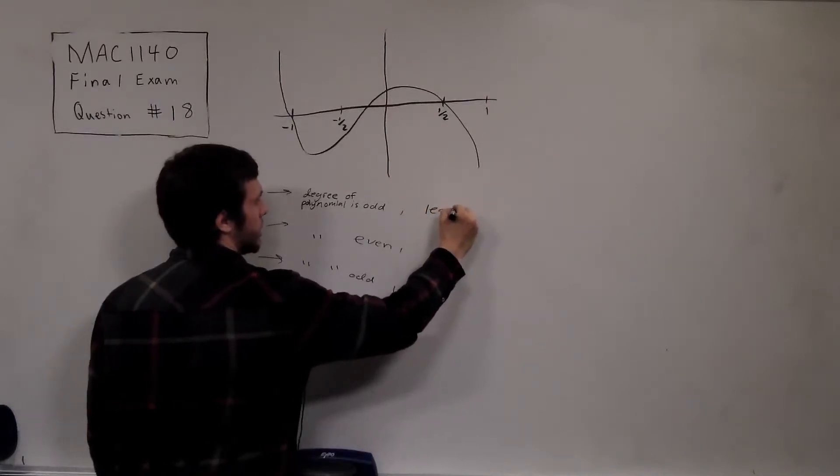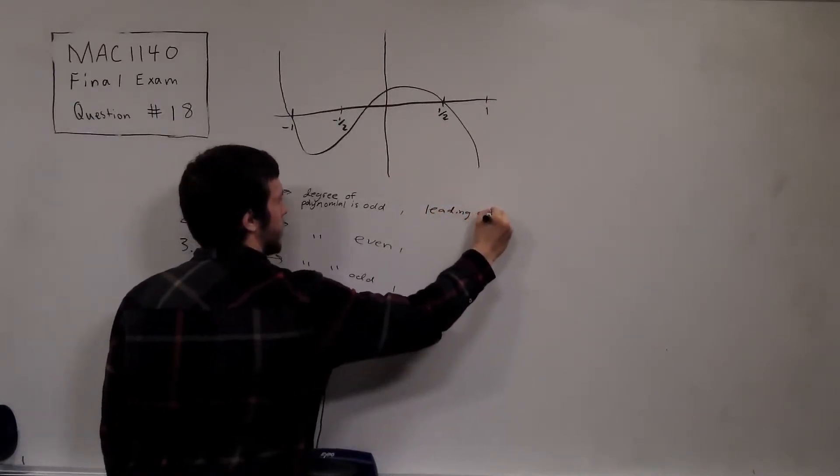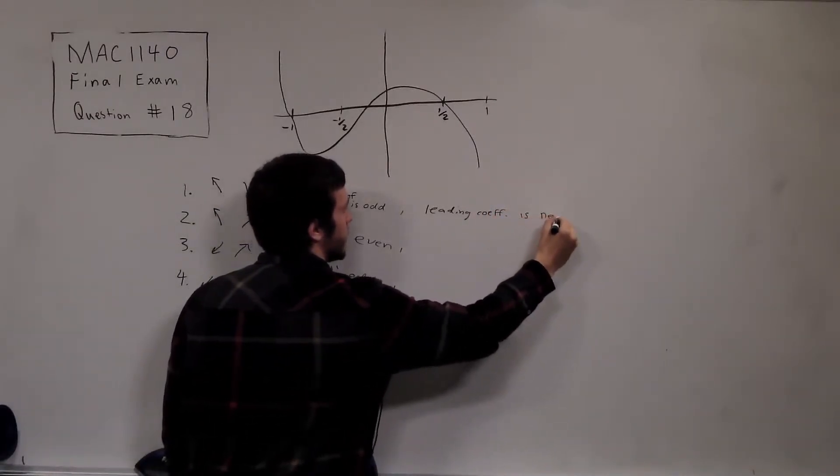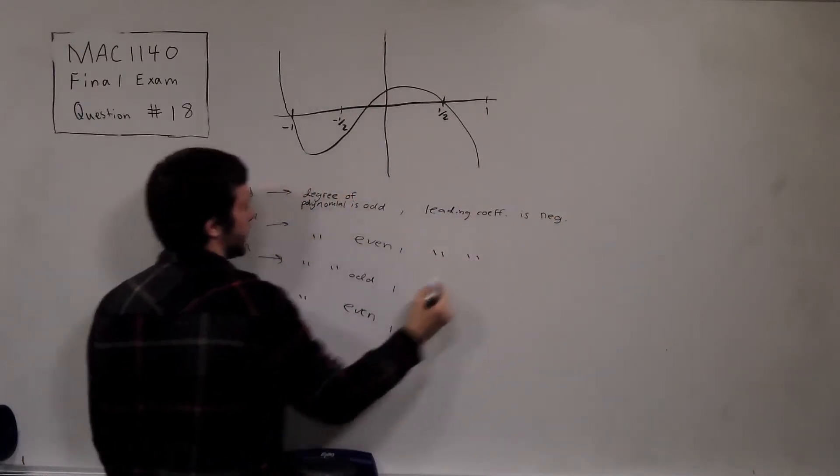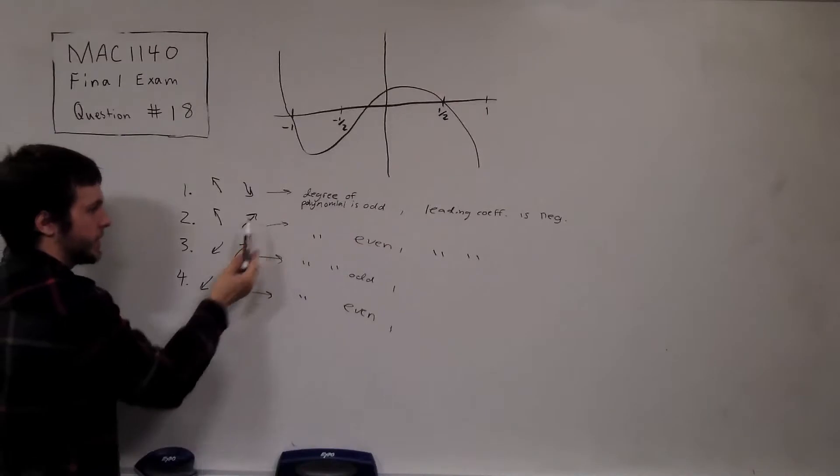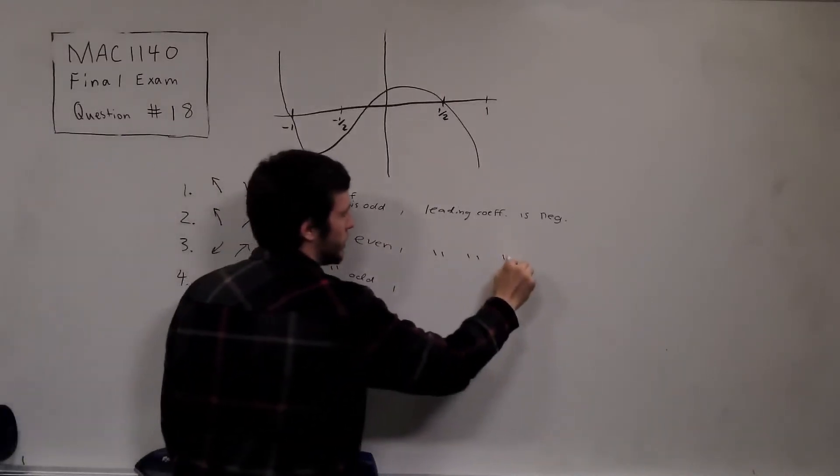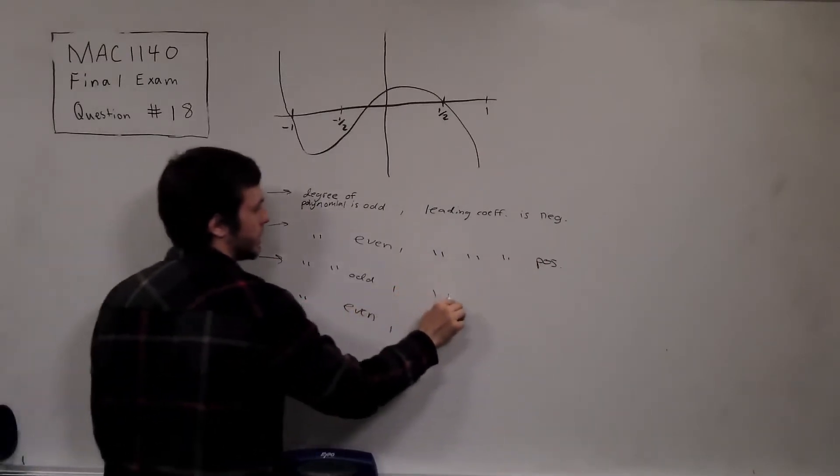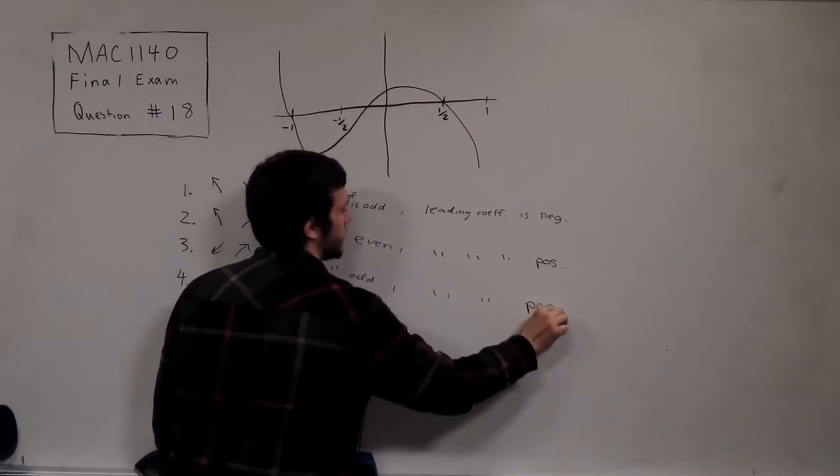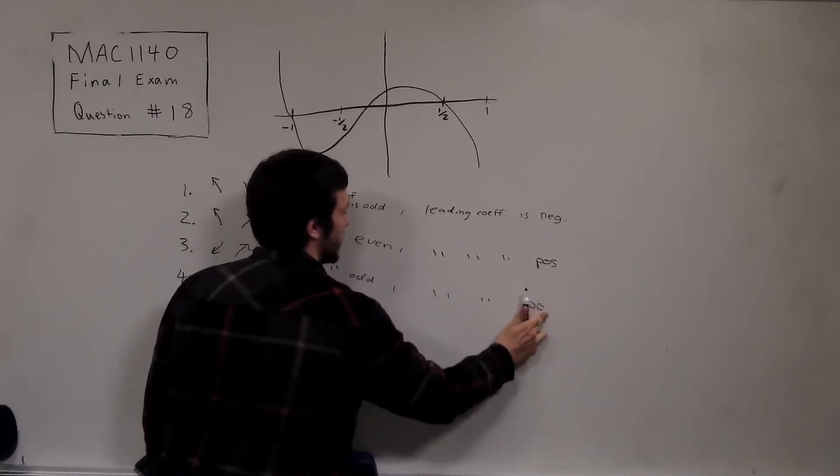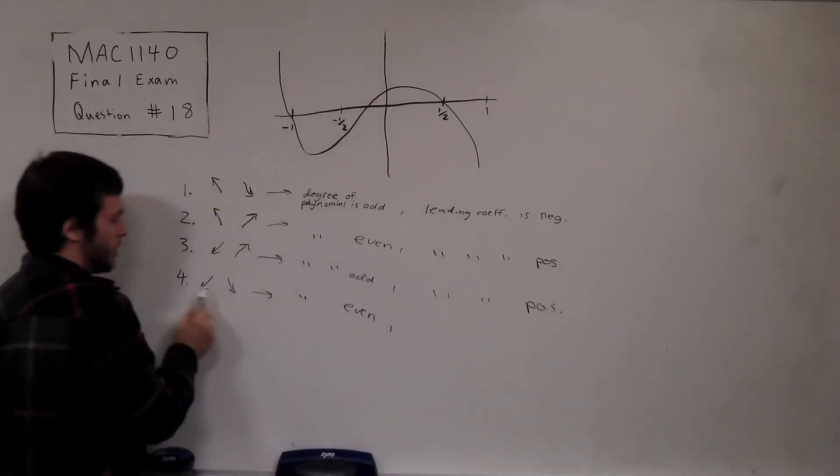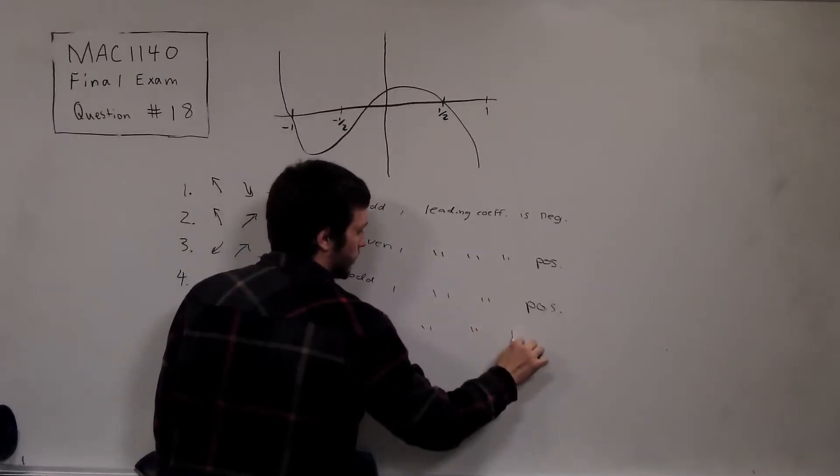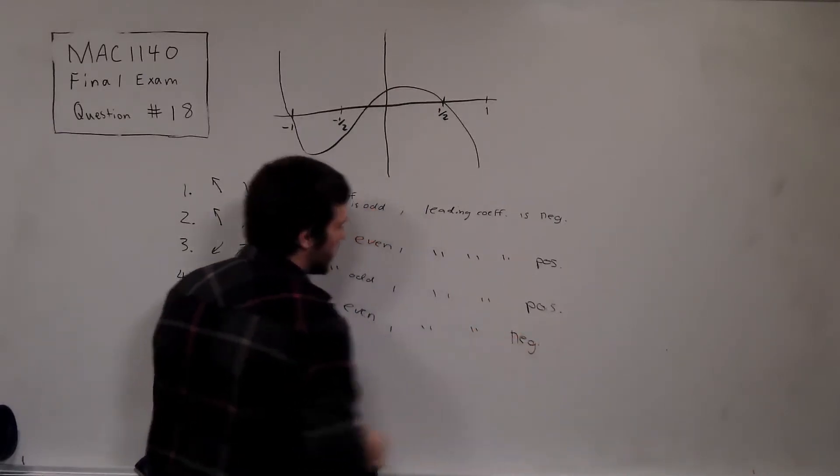So, leading coefficient, I'll just abbreviate with coef, is neg, or negative. And then here, for case two, the right-hand side is pointing up. That means the leading coefficient is positive. Just write pos. Case three, we're going up again. So this is also positive leading coefficient. And here, case four, the right-hand side points down. That means that's a negative leading coefficient.